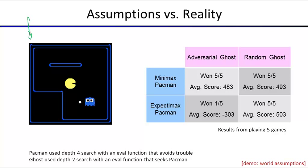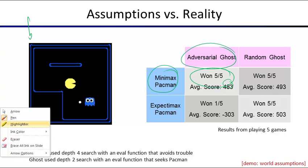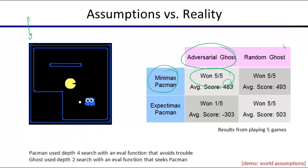Let's simulate this with a Pac-Man game: one food pellet, one Pac-Man, one ghost. Minimax Pac-Man against an adversarial ghost: running five games, Pac-Man won five out of five with an average score of 483. For a random ghost with expectimax: Pac-Man won five out of five with an average score of 503. We get more here because in a better world where the ghost isn't adversarial, we can do better. We can also mix and match: running expectimax against an adversarial ghost, Pac-Man wins only one out of five — too optimistic.